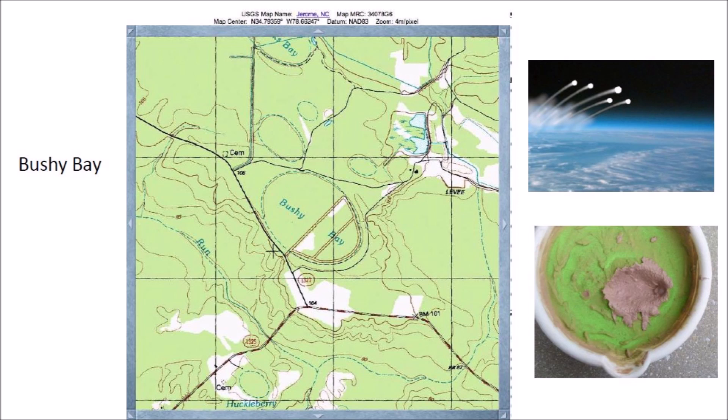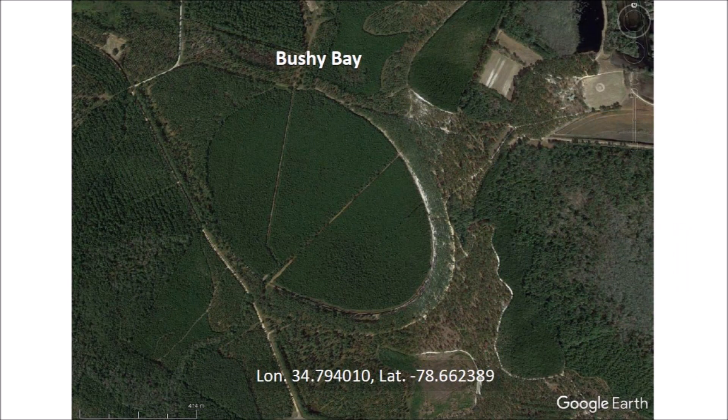The names of the Carolina Bays are sometimes quirky and of unknown origin, but they are formally adopted by the U.S. Geological Survey as the names of the landforms. A satellite image of Bushy Bay shows two ditches that drain the bay through a cut in the western rim. The bay has been converted from a wetland area to a tree plantation.